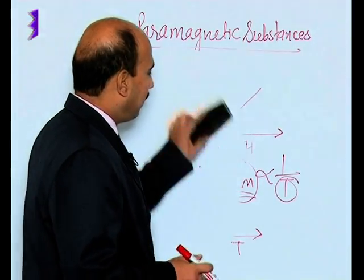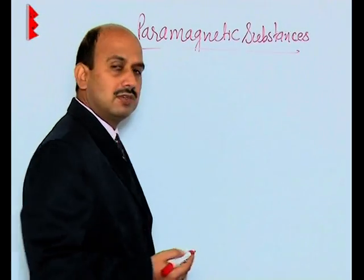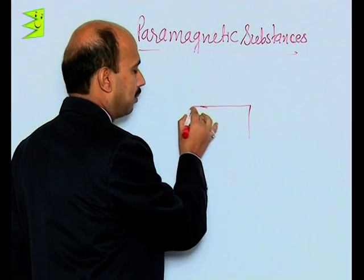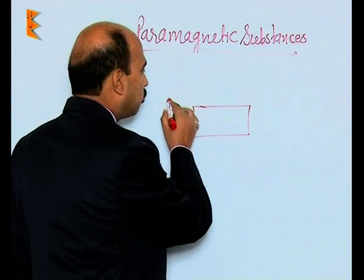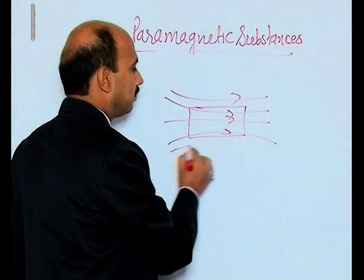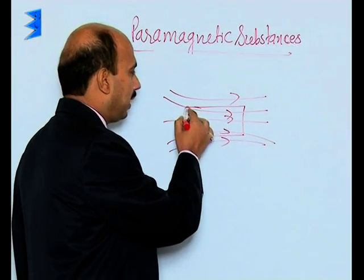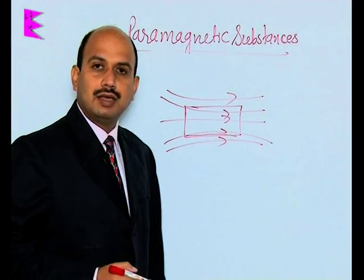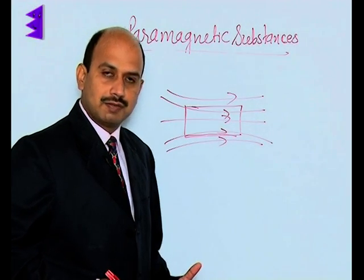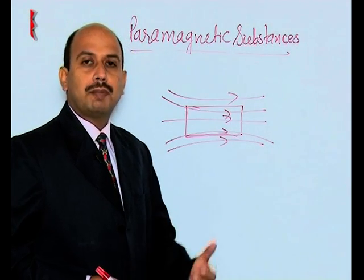When paramagnetic substances are placed in an external magnetic field, magnetization takes place as discussed. If there is a paramagnetic material in the magnetic field, most of the field lines prefer to pass through the material. Also, if you place the paramagnetic material in a non-uniform magnetic field, it moves from the weaker parts of the field to the stronger parts.